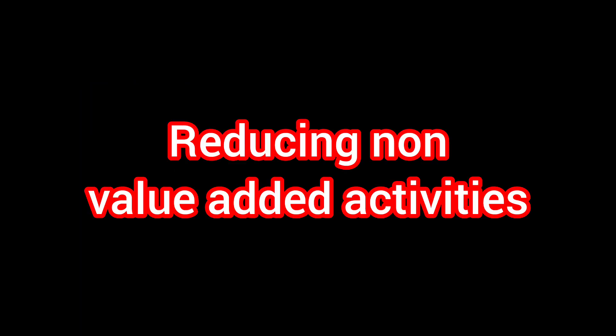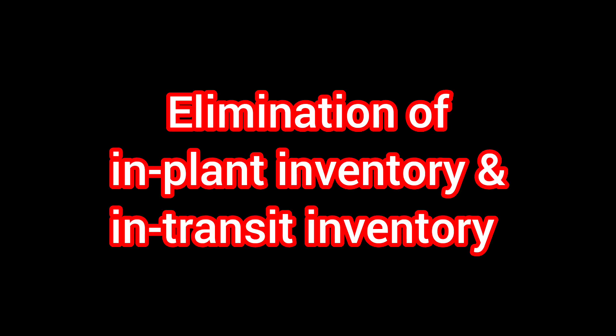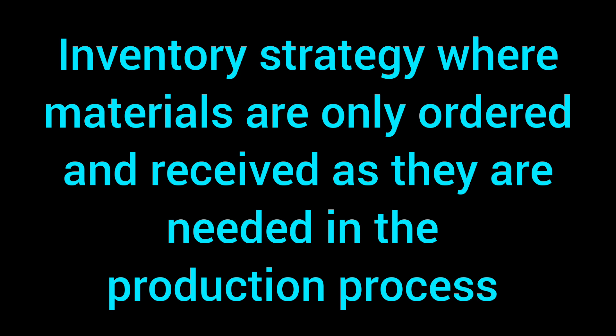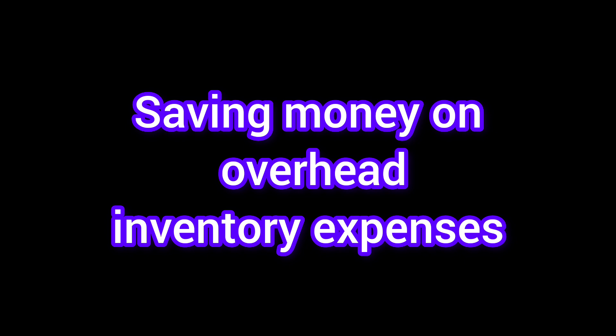The objectives of this approach are: it helps to reduce non-value-added activities; it helps to eliminate in-plant inventory and in-transit inventory. Since Just-In-Time is a management and inventory strategy, one of its most important objectives is quality and reliability improvement. Materials are only ordered and received as needed in the production process, with the goal of reducing cost by saving money on overhead inventory expenses.